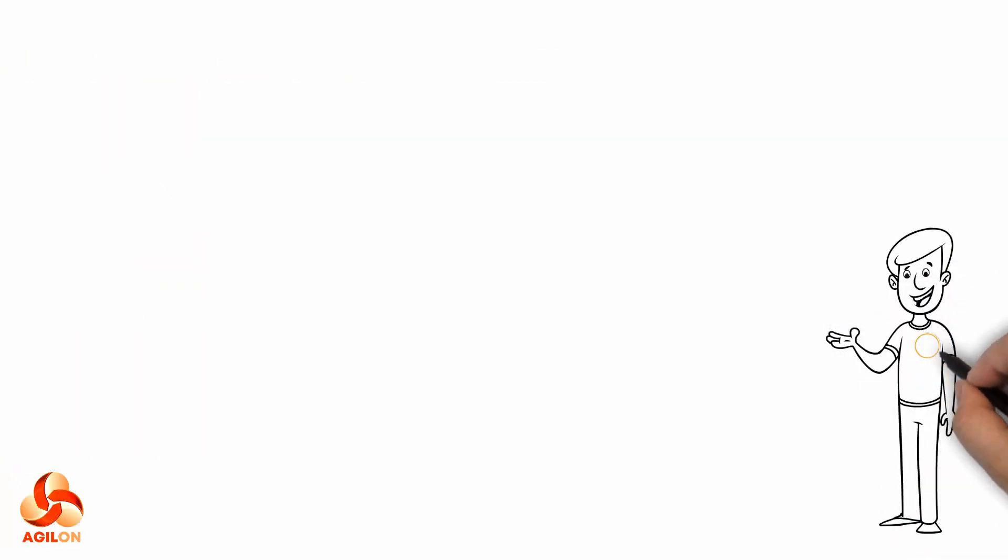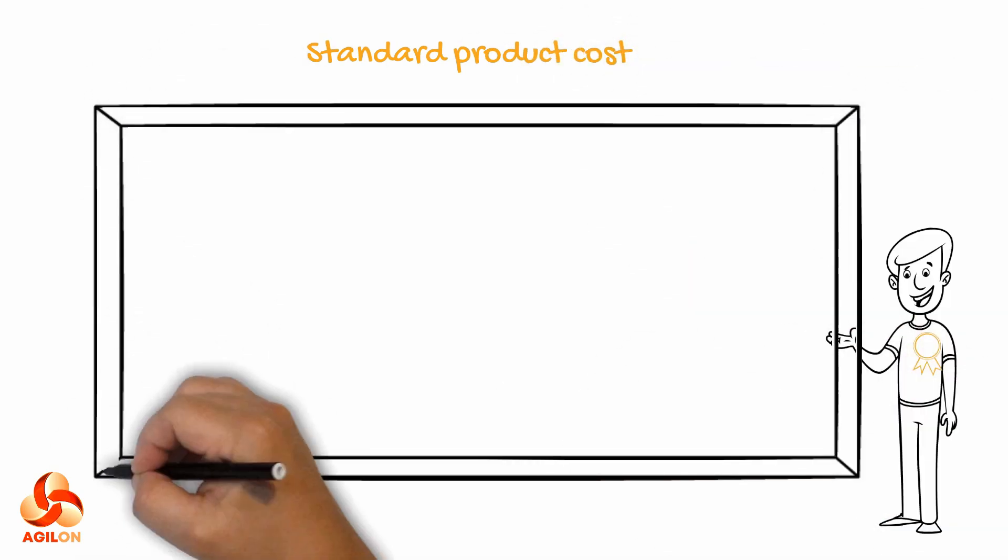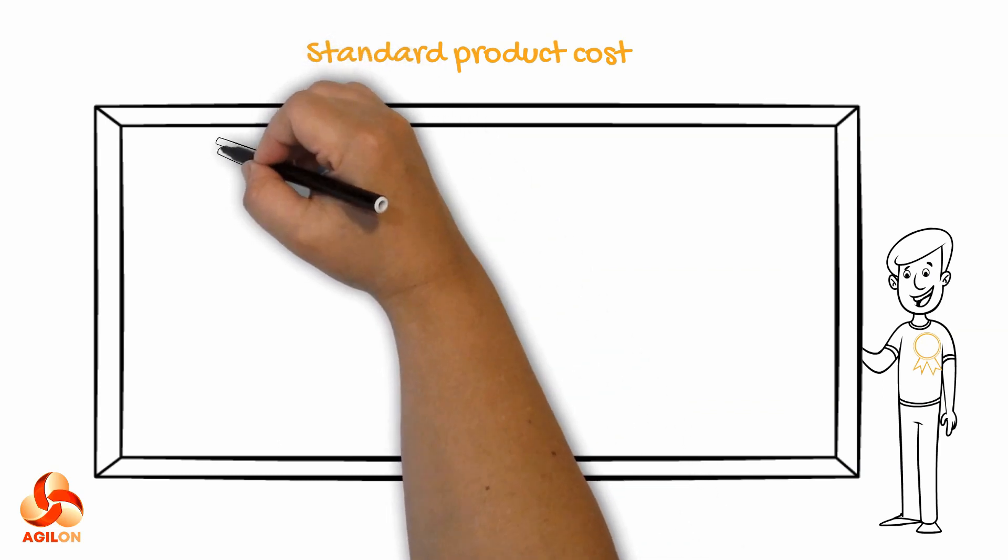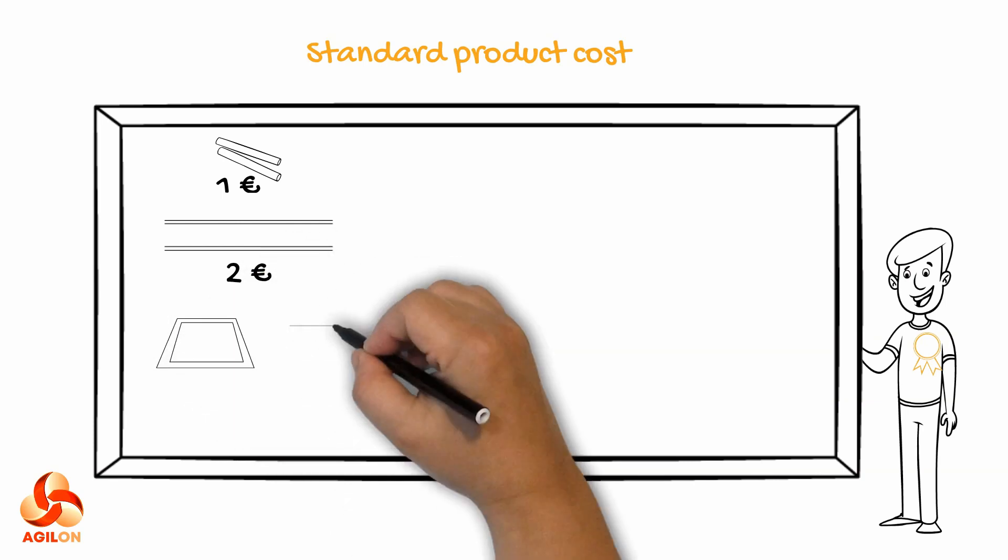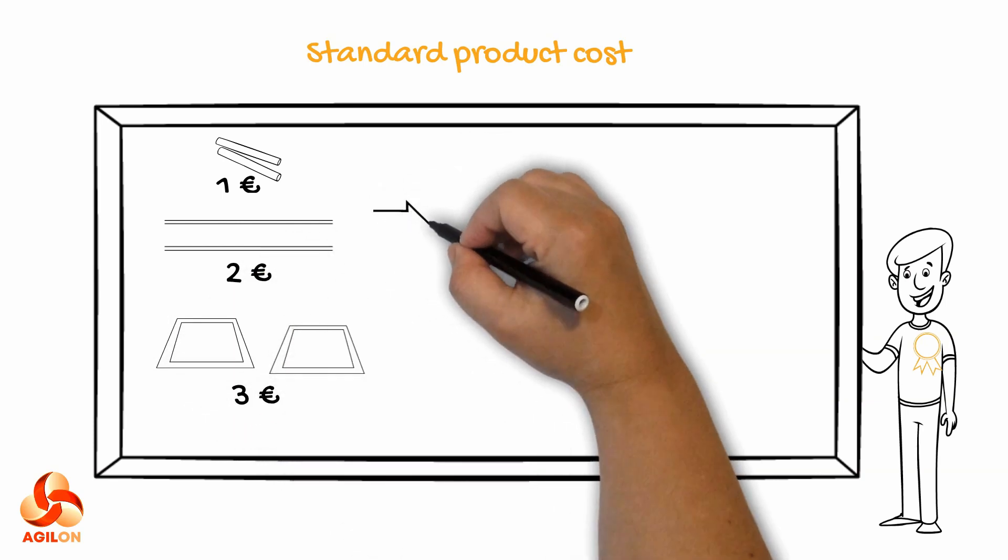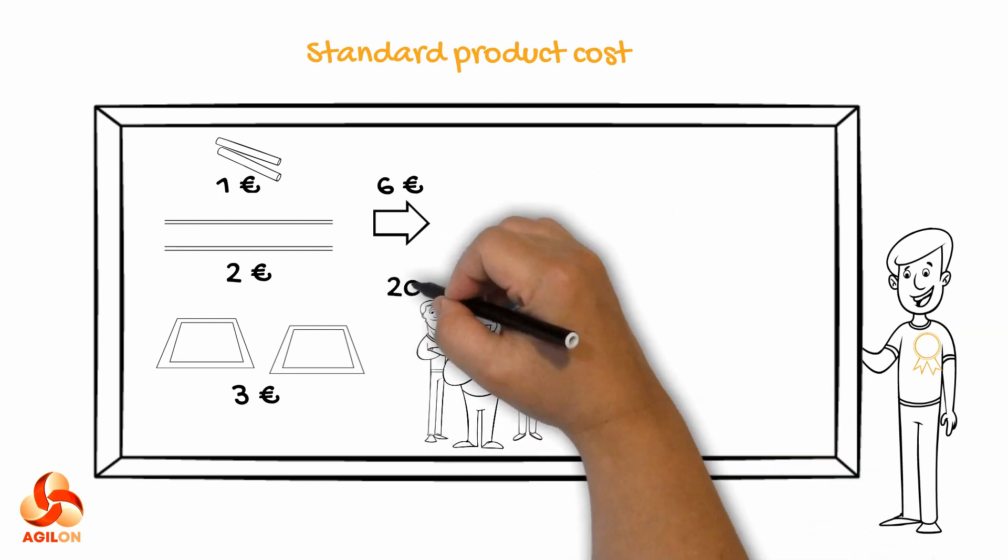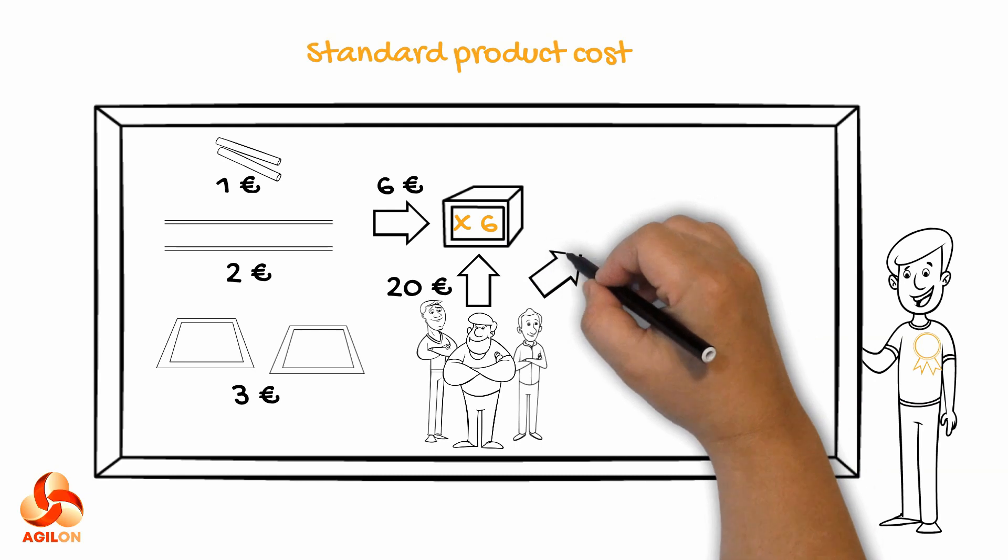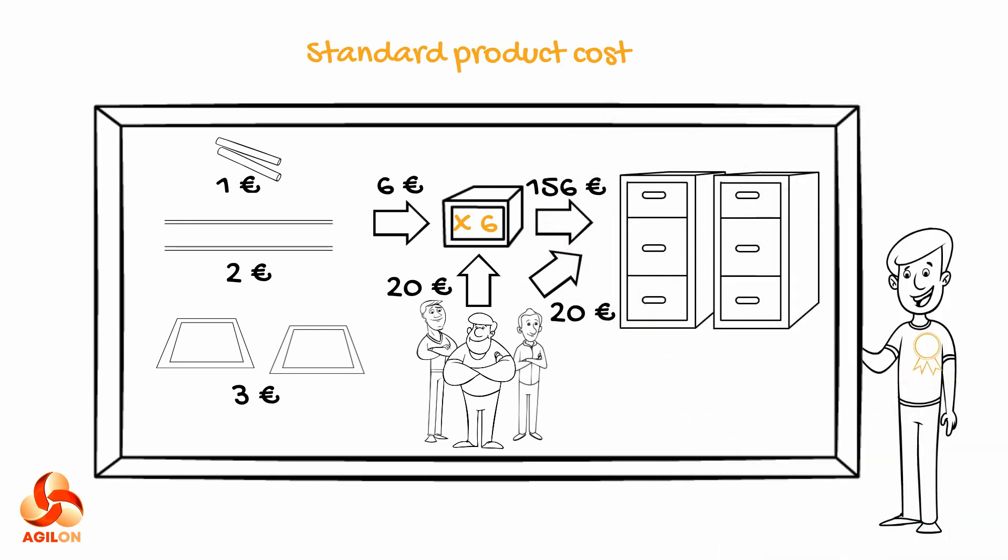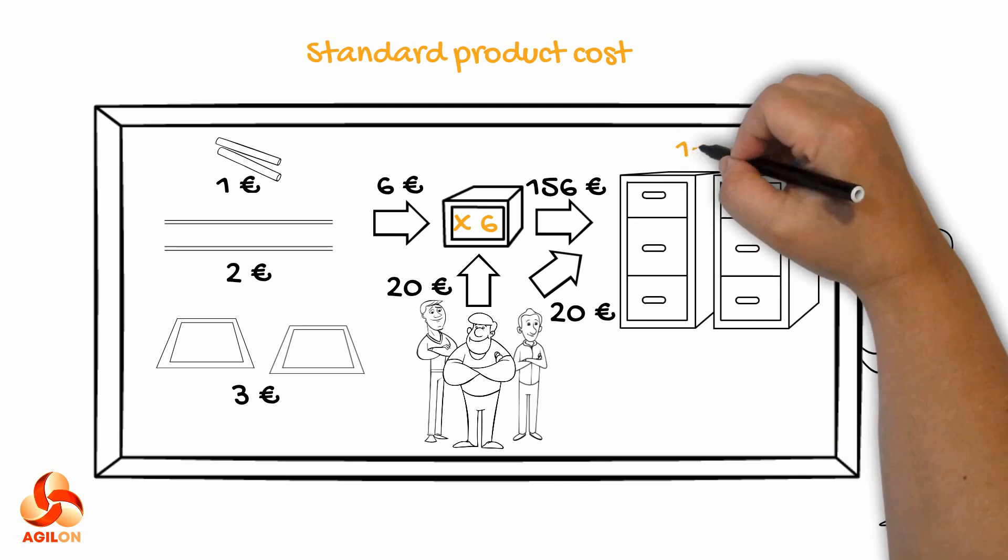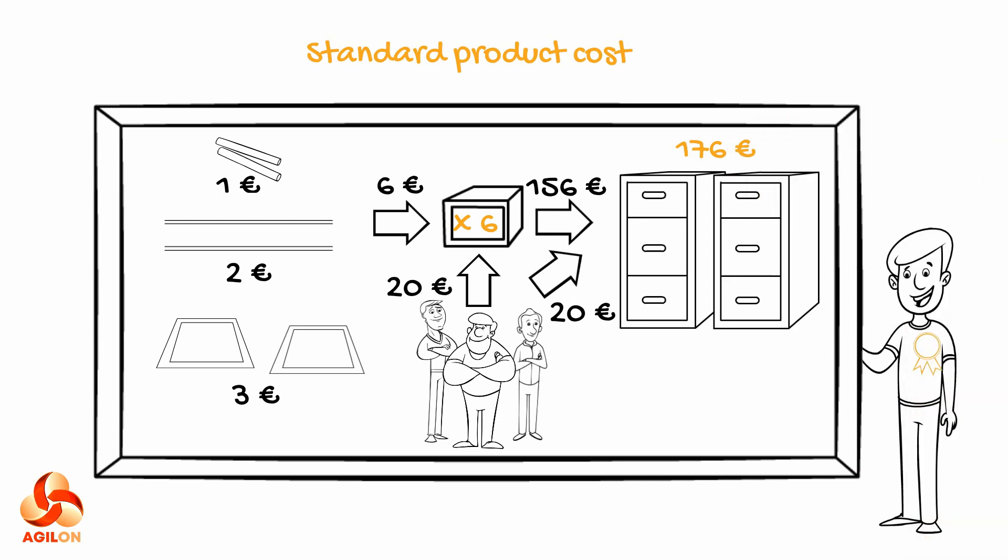Currently, the cost of our products is the sum total of the standard cost of consumed materials and labor. Let's assume that the standard cost of materials consumed to make a single drawer was 1 plus 2 plus 3, which equals 6 euros. And for 6 drawers, it equals 36 euros. The labor cost to build 6 drawers and to assemble the sway is 20 times 6 plus 20, which equals 140 euros. So, the standard cost of a drawer sway will be 176 euros in total.